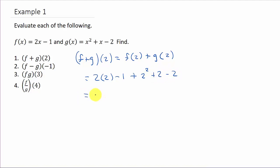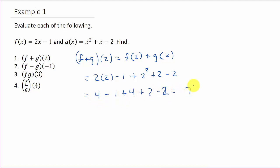This is going to give me 4 minus 1, plus 4, plus 2, minus 2. You can see that last part goes to 0. 4 plus 4 is 8, minus 1 is 7. So for f plus g of 2, we get 7.